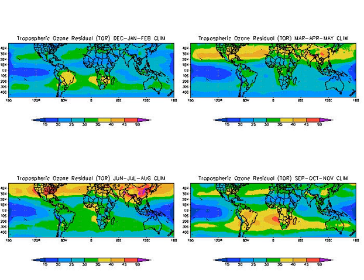This reaction initiates the chain of chemical reactions that remove carbon monoxide, methane, and other hydrocarbons from the atmosphere via oxidation. Therefore, the concentration of tropospheric ozone affects how long these compounds remain in the air. If the oxidation of carbon monoxide or methane occurs in the presence of nitrogen monoxide (NO), this chain of reactions has a net product of ozone added to the system.